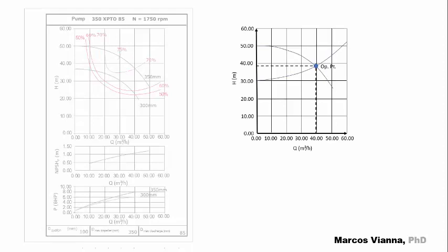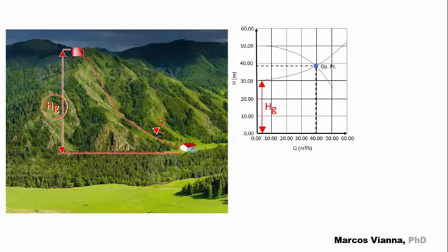Now, each system has its own characteristic curve that we must find. It begins with what we call geometric head. It's the difference between the head that we wish to reach and the initial head. The head losses corresponding to each flow in the system must be added to the geometric head.